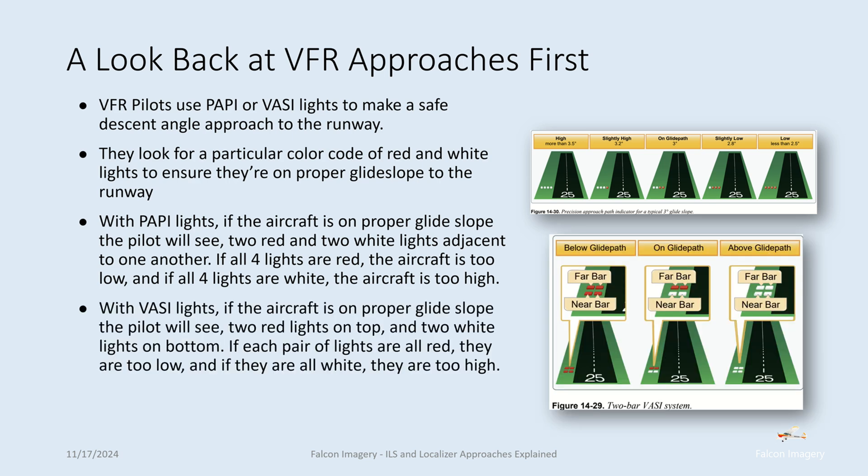With VASI lights — stacked pairs, sometimes two or three pairs — if the aircraft is on proper glide slope, the pilot will see two red lights on top and two white lights on bottom for a two-bar VASI system. If each pair is all red, they're too low; if all white, the aircraft is too high. There's a saying: white over white, you're high as a kite; red over white, you're all right; red over red, you're dead. If you see red over red, arrest that descent, add power, and maintain altitude until you get back on the proper visual glide slope.